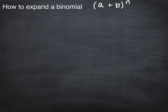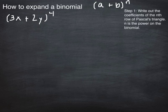Binomial expansion is where we take a binomial, a first term plus a second term, in this case A plus B, and we raise it to the nth power. So we're going to expand it out without having to foil a bunch. So the steps to binomial expansion are as follows. Step 1 is to write out the coefficients of the nth row of Pascal's triangle, and n is the power of the binomial.